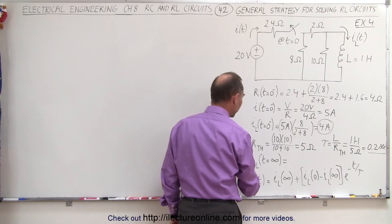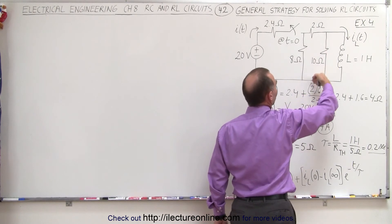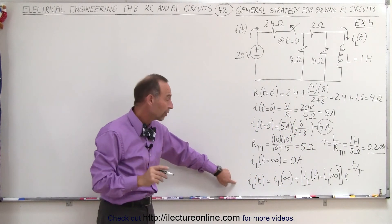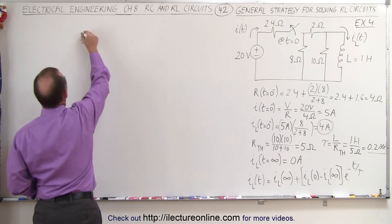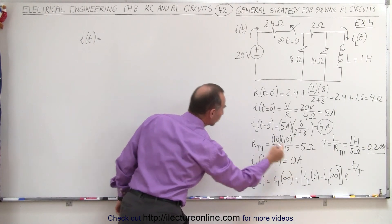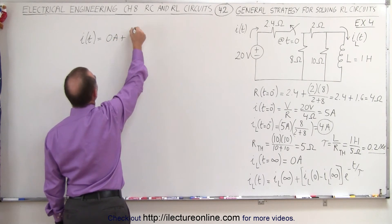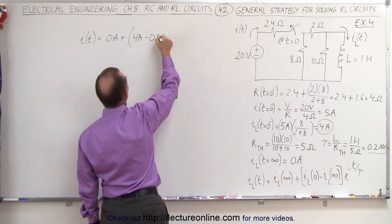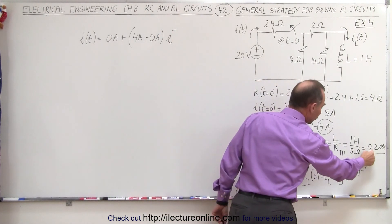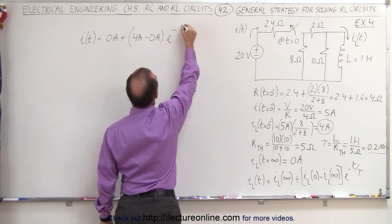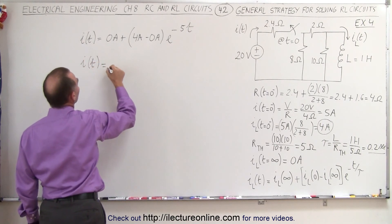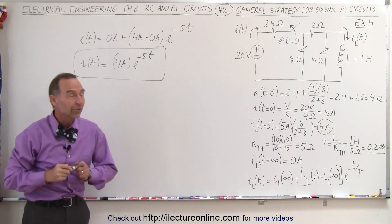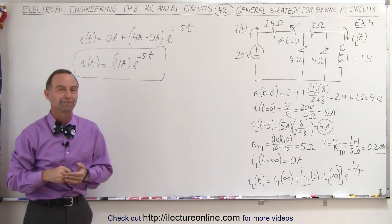The current through the inductor when time goes to infinity is 0 amps, since there's no voltage or current source pushing the current. Now we find the current as a function of time: I(t) = I(∞) + [I(0) - I(∞)] × e^(−t/τ) = 0 + (4 − 0) × e^(−t/0.2) = 4 × e^(−5t) amps. That's how we determine the current through the inductor after the switch opens.